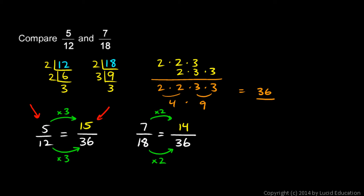5-twelfths is equal to 15 over 36, and 7-eighteenths is equal to 14 over 36. And 15 over 36 is clearly bigger than 14 over 36. That means 5-twelfths is bigger than 7-eighteenths. And we're done, and that's our answer. 5-twelfths is larger than 7-eighteenths. We were told to compare 5-twelfths and 7-eighteenths, excuse me. Need a 1 right there. We were told to compare 5-twelfths and 7-eighteenths, and there we have it.